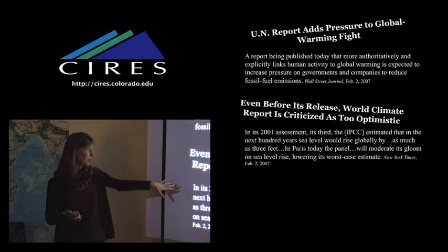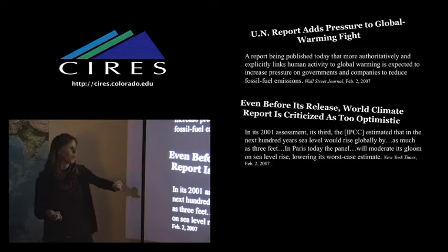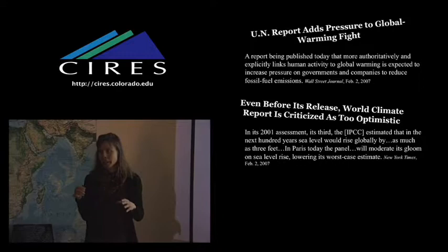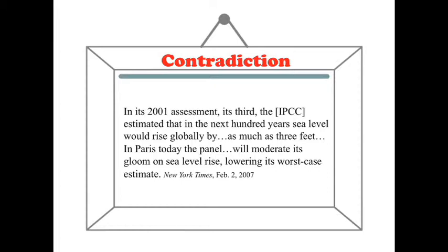It's too good to be true. So in its 2001 assessment, its third, the IPCC estimated that in the next hundred years, sea level would rise globally by as much as three feet. But in Paris today, the panel will moderate its gloom on sea levels, lowering its worst-case estimate. So in this case, what they're doing is they're setting up sort of that contradiction for us by saying that, well, in fact, they thought it was going to be as much as three feet, but they were really wrong. It's going to be a few inches. This is nothing to really worry about. So they've set this up under this framework of a contradiction.